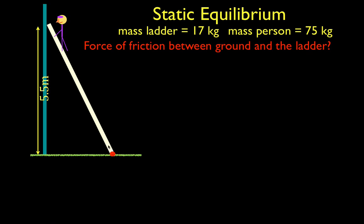That friction force is acting right here at the base. If there was no friction the ladder would slip down and move out to the right. The force of friction opposes that motion, so it points in the opposite direction — that is the force we're trying to solve for. This is a classic static equilibrium problem: nothing is moving, everything is static, and therefore all the forces must be in equilibrium. To solve this we're going to sum up the forces in the x direction, sum up the forces in the y direction, sum up the torques, set them equal to zero, and solve for this force.